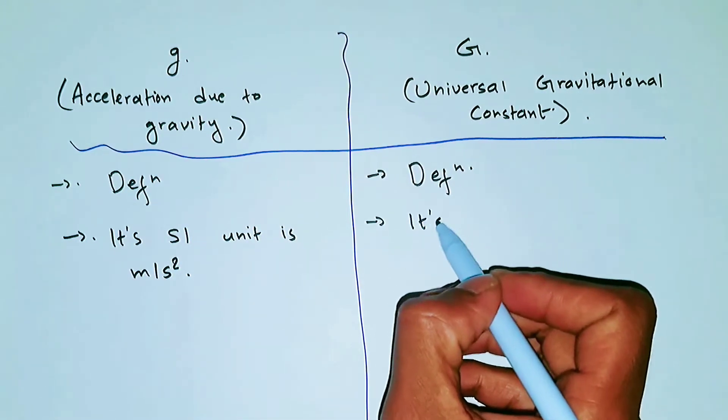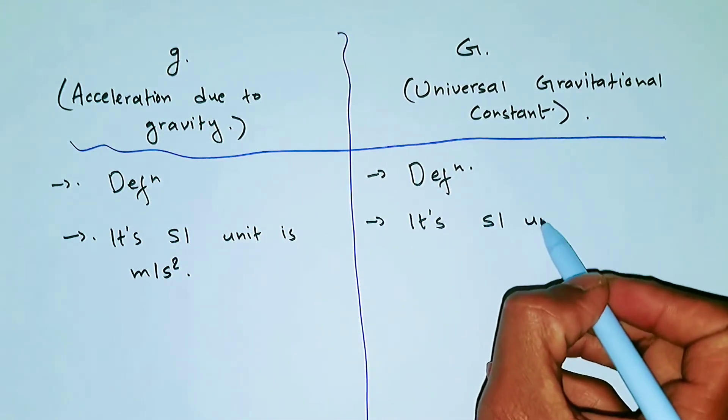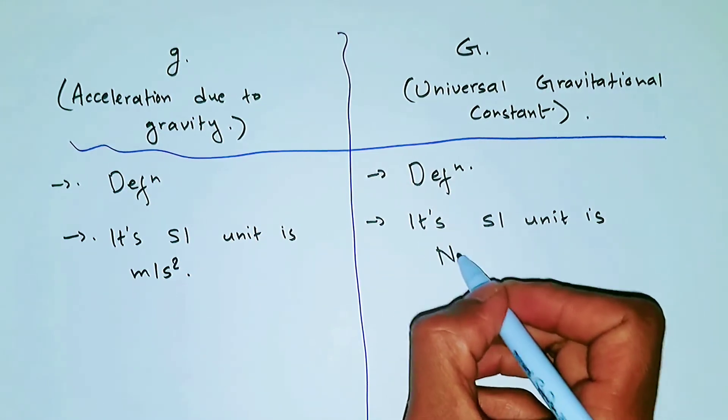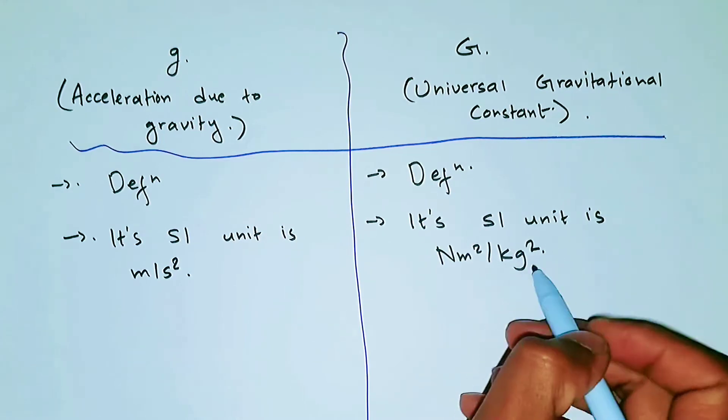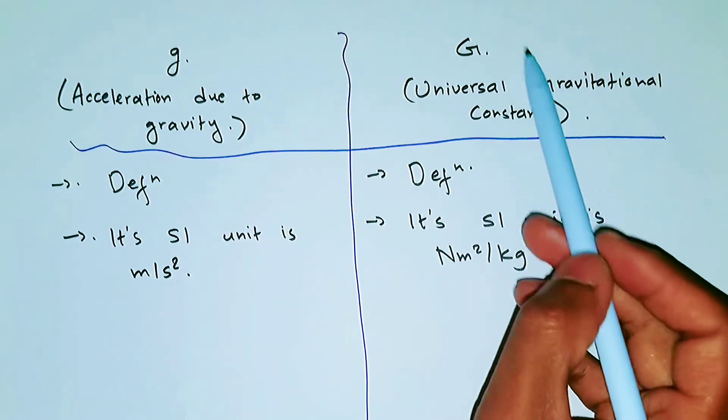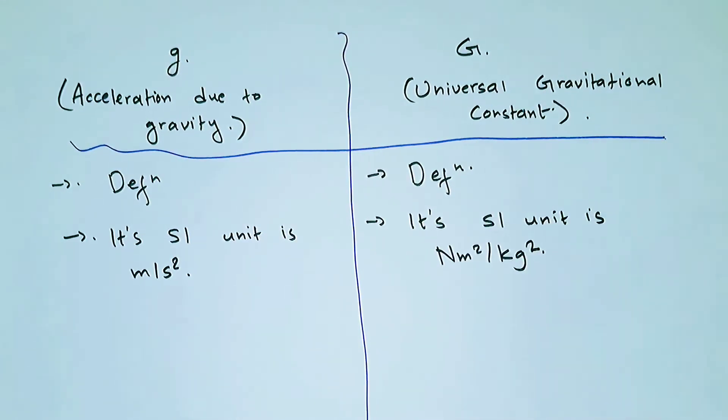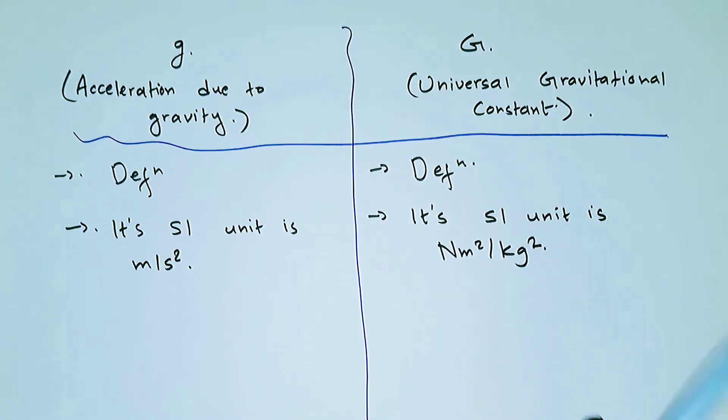The unit of capital G is Newton meter square per kg square. We have already derived this unit in the video about the discussion of capital G, so please be sure to check it out.